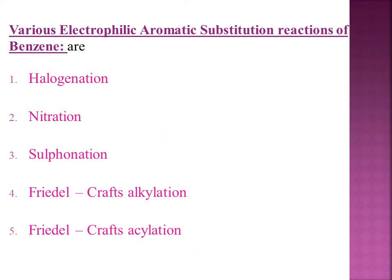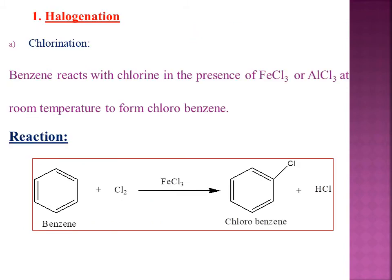In this video I will explain halogenation. Halogenation is the substitution of benzene with halogens. For chlorination specifically, benzene reacts with chlorine in the presence of a catalyst like FeCl3 or AlCl3 at room temperature to form chlorobenzene. The hydrogen from the ring is taken up as HCl.